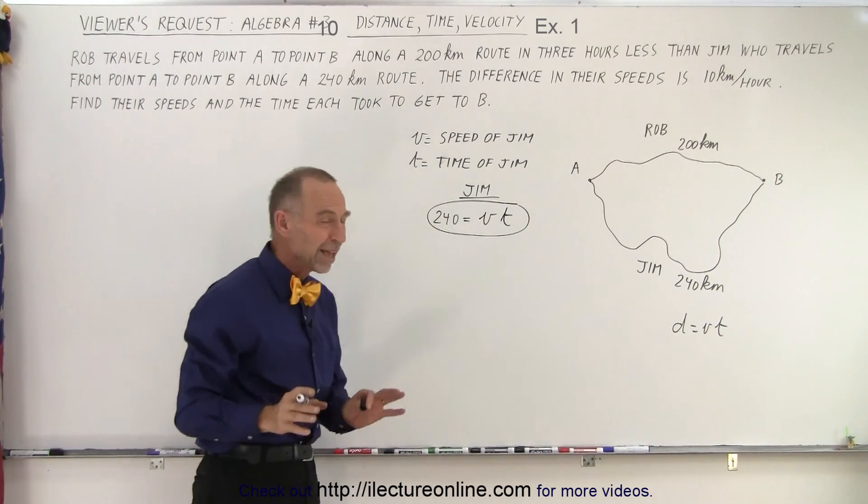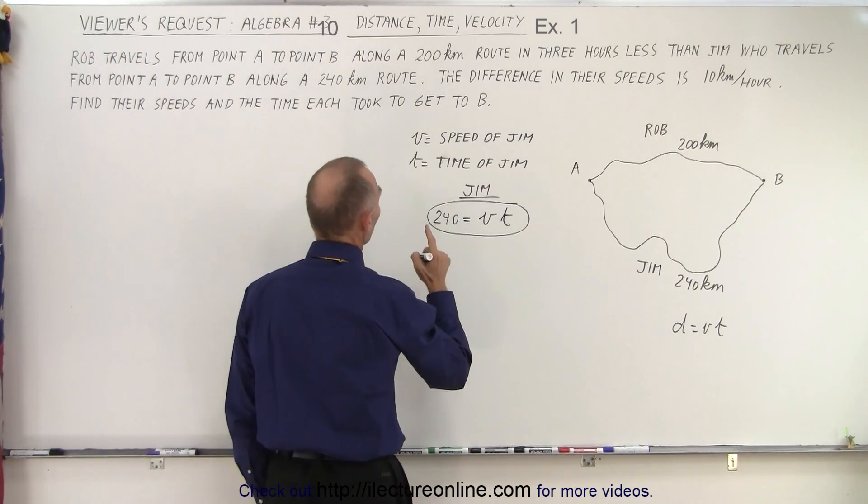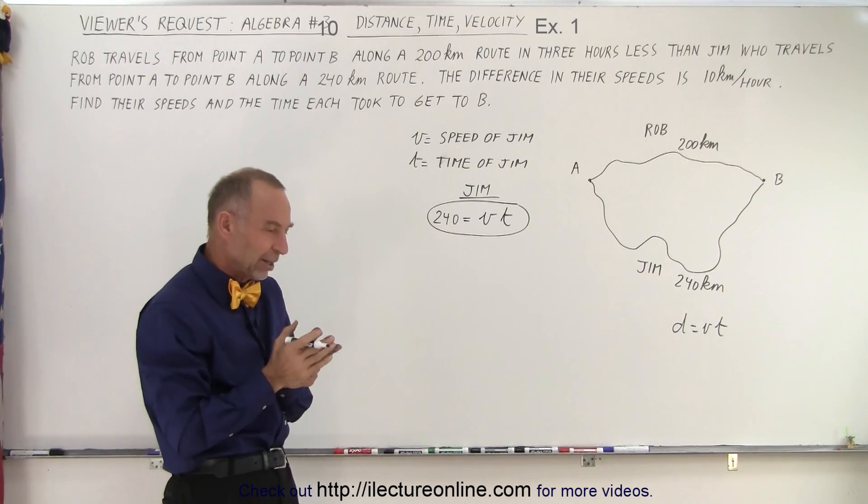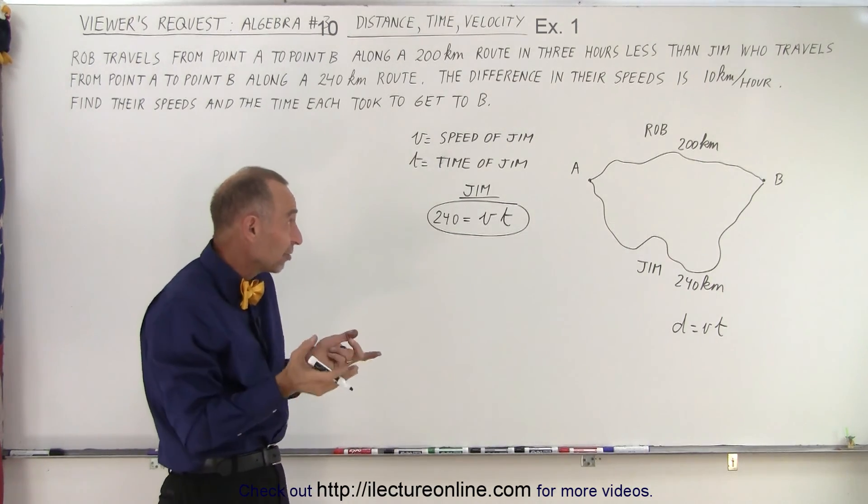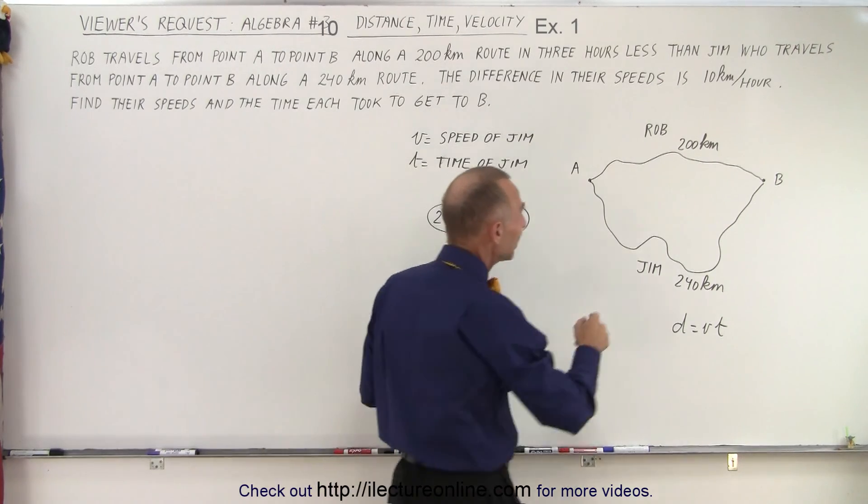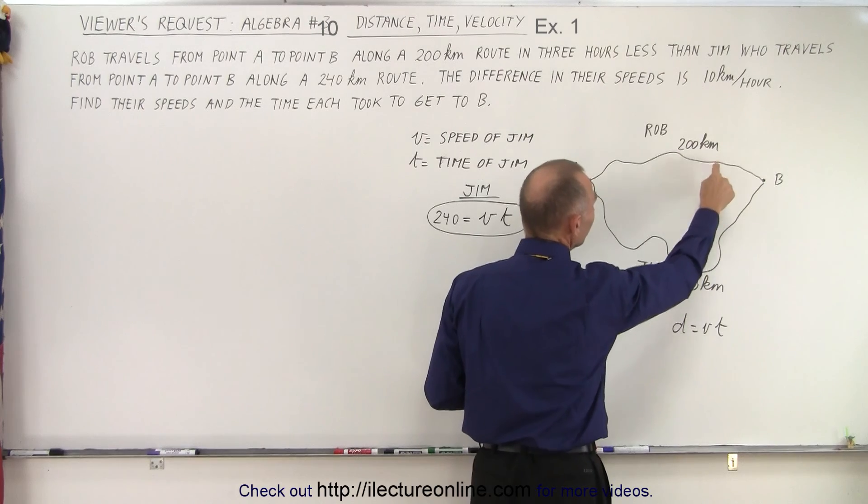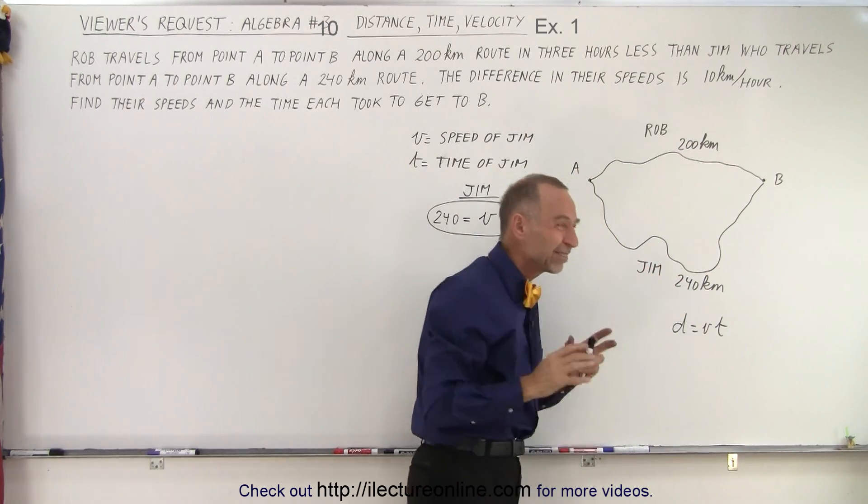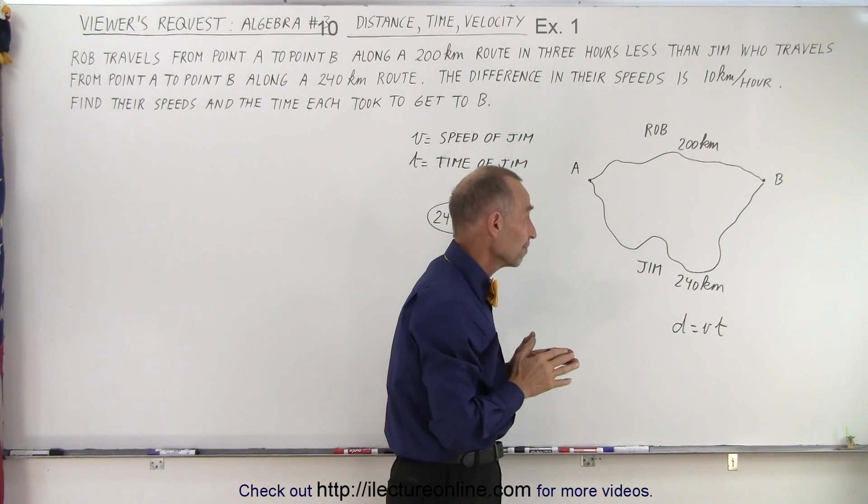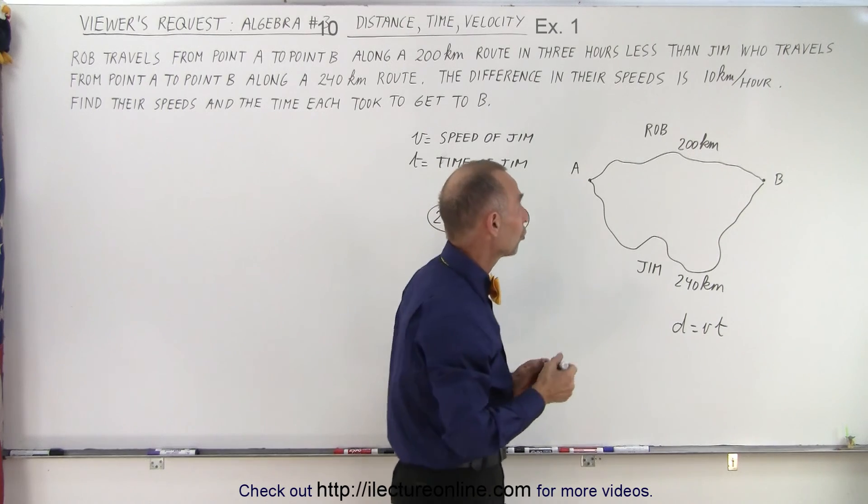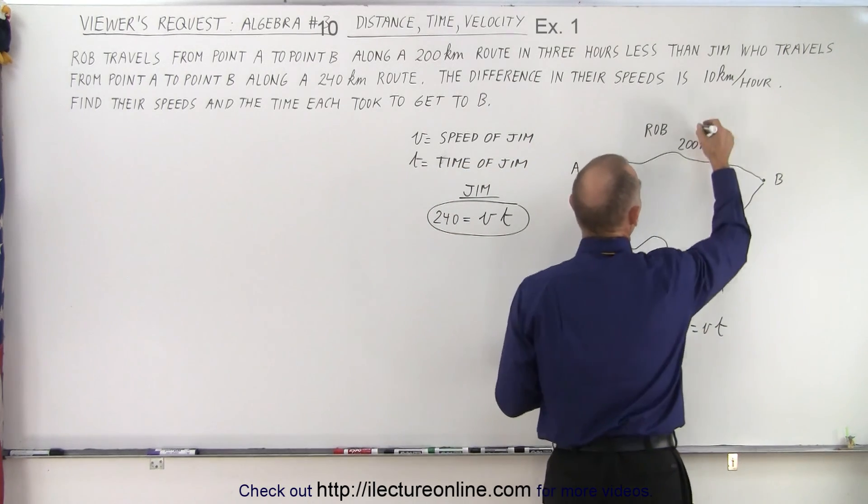So now we do the same for Rob. So what would be the speed of Rob? We know that the difference of their speed is 10 kilometers per hour but is Rob going faster or slower? Well since Rob takes three hours less even though he's not taking that much shorter of a route, my assumption is that Rob is the faster one. Now it could be wrong and if we're wrong we'll figure that out.